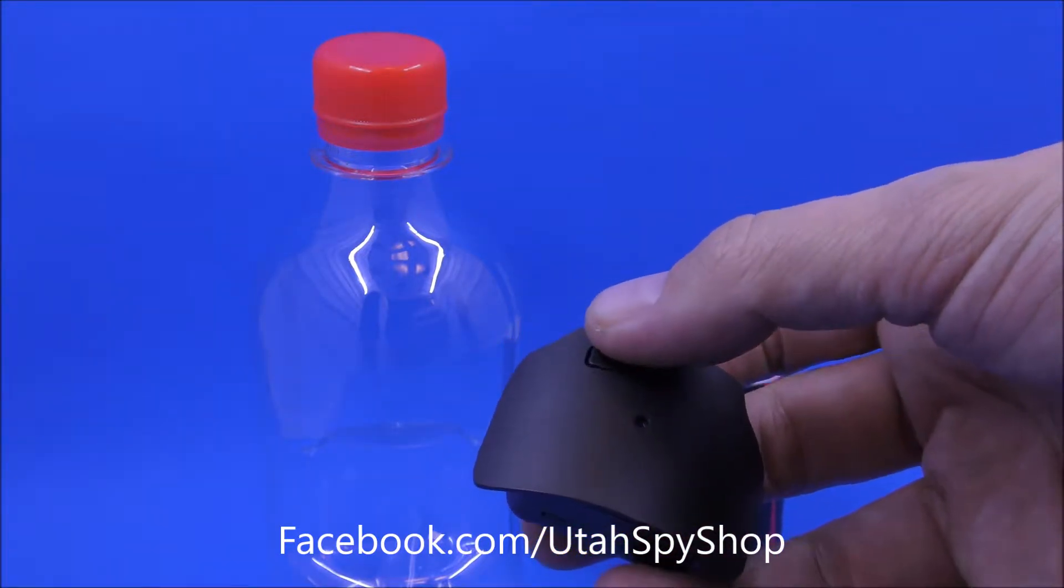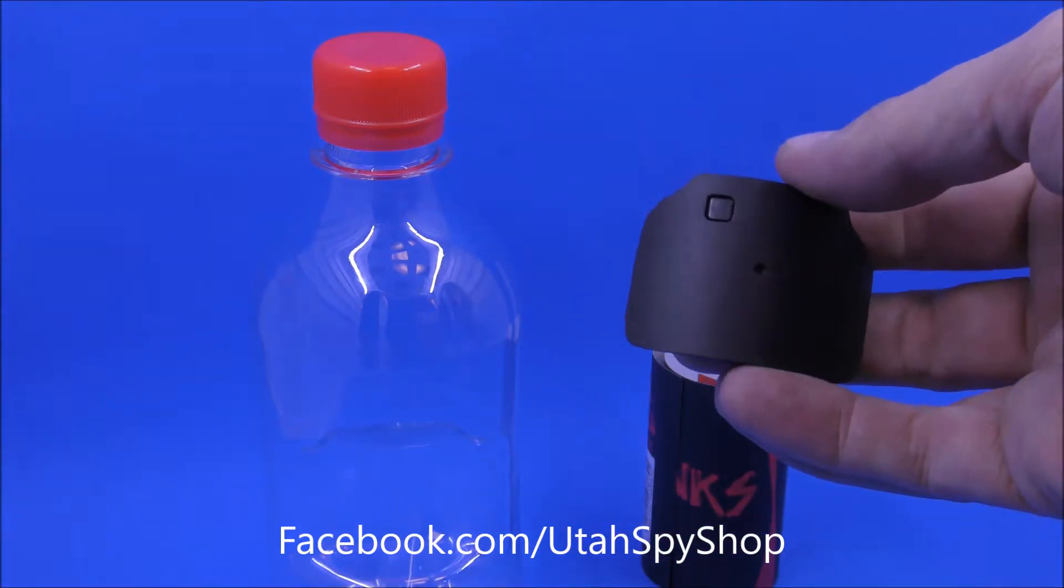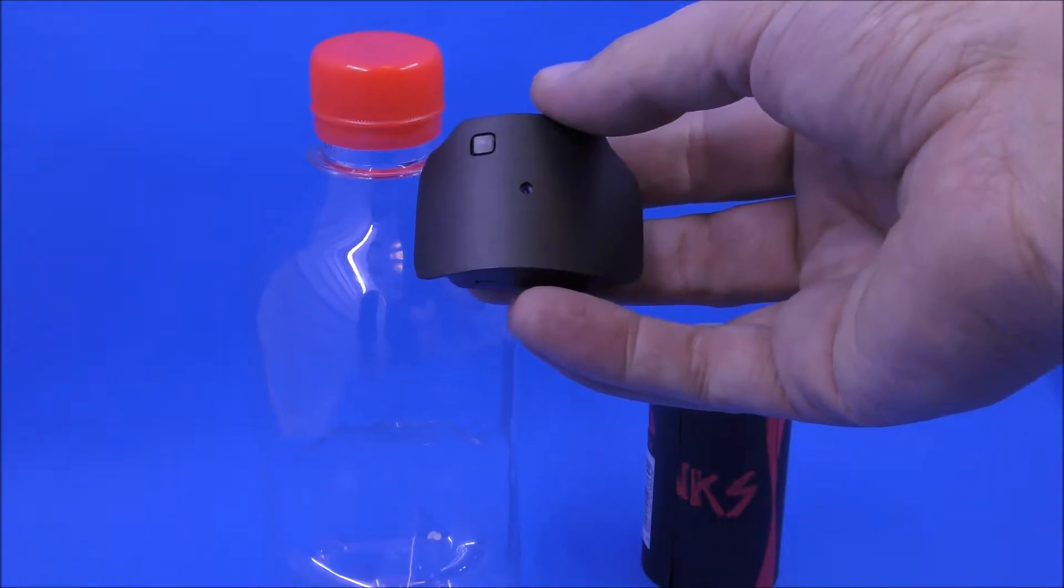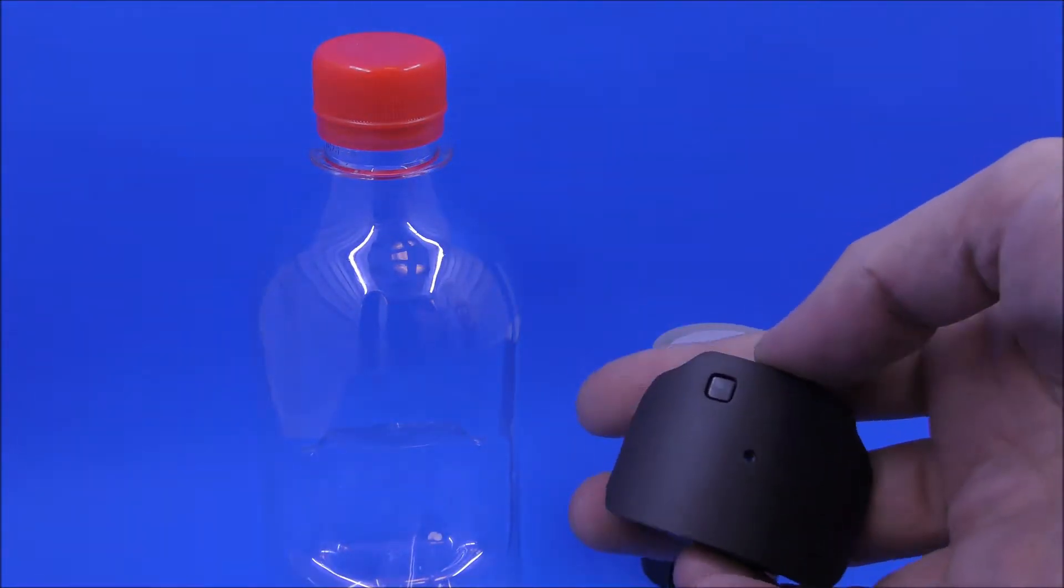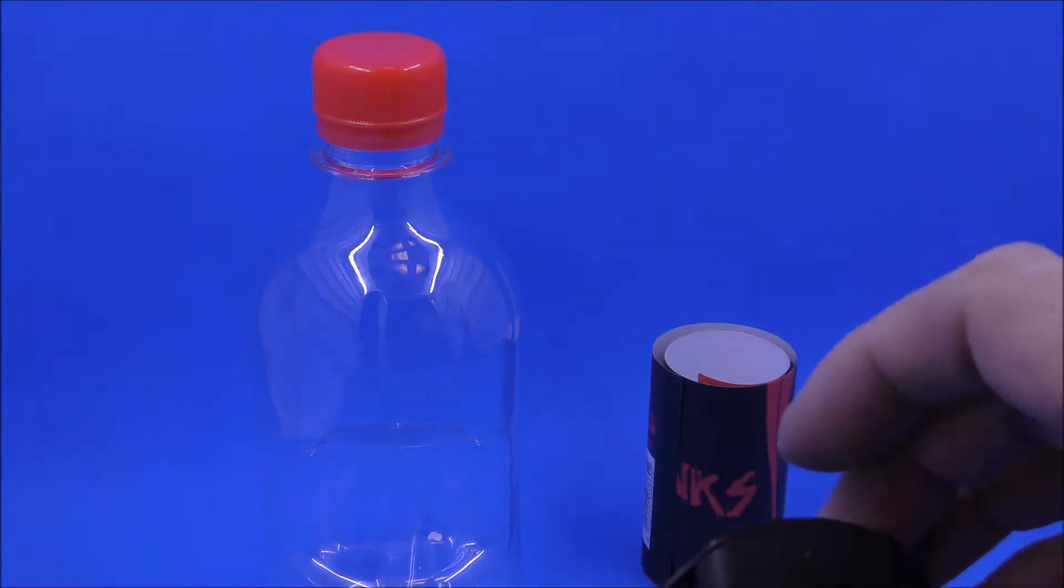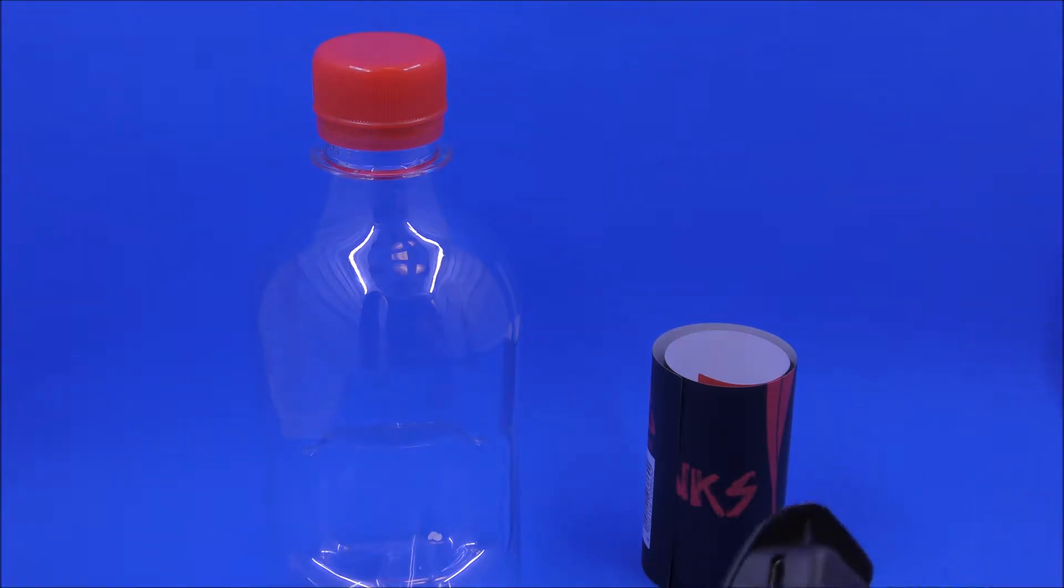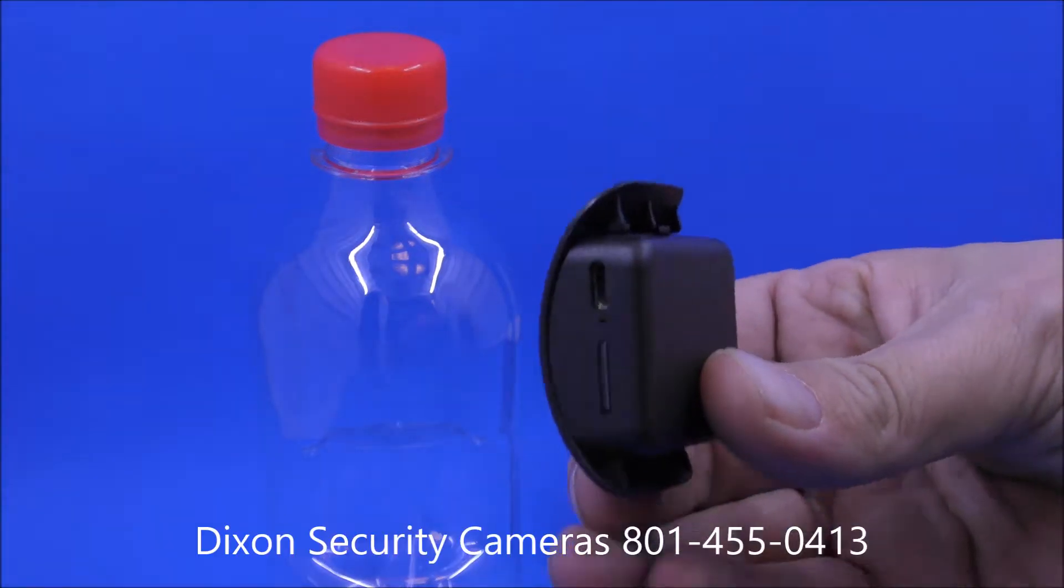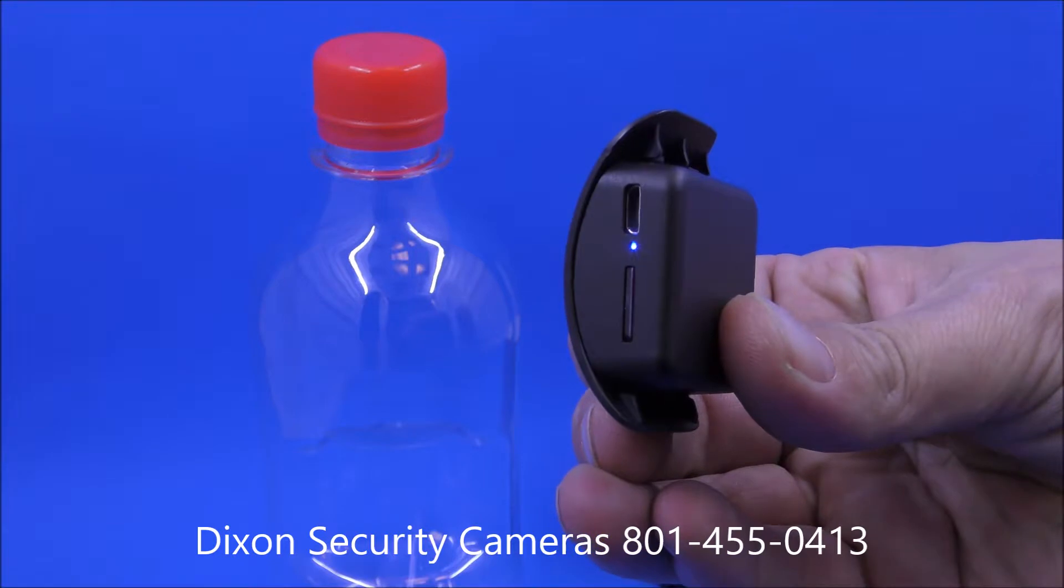So once it's powered up and charged, it's a simple process of just pressing the button. So if I have the button here, there's an indicator light on the bottom. See how it comes on blue? And then you press it again, it blinks three times and shuts off.